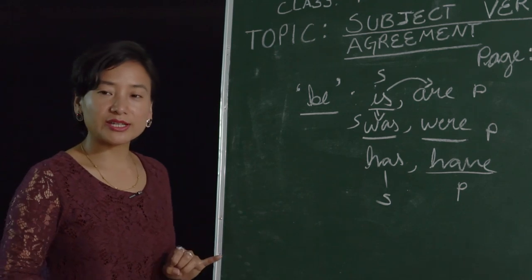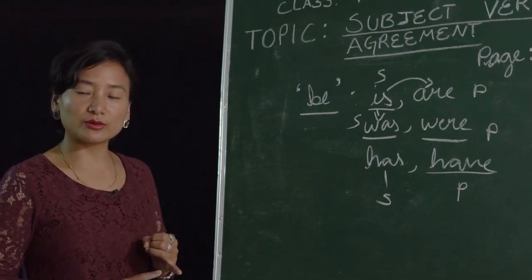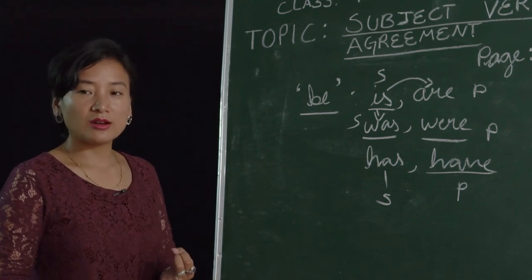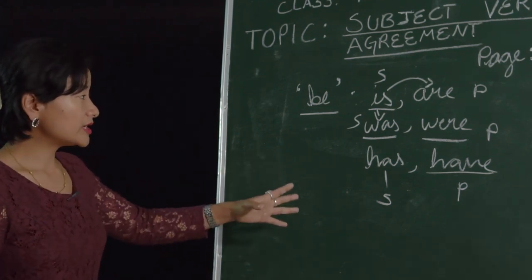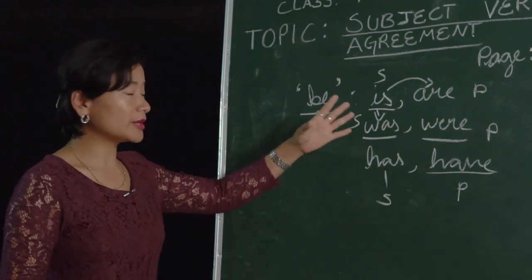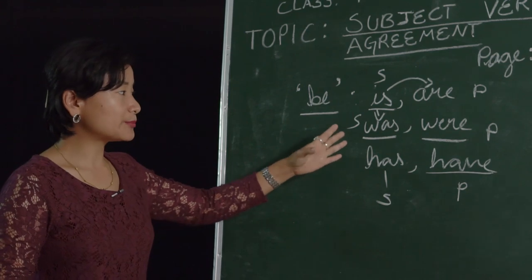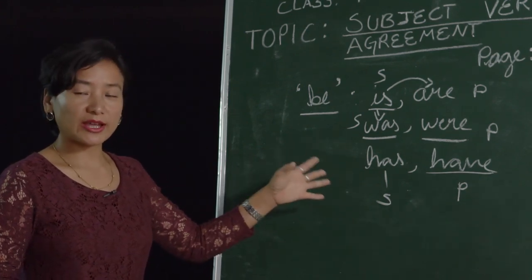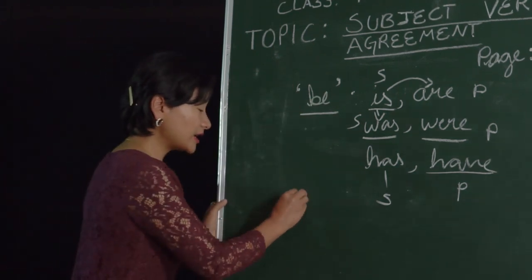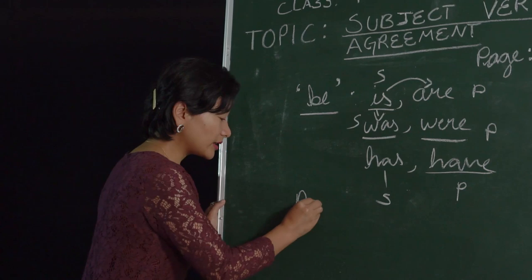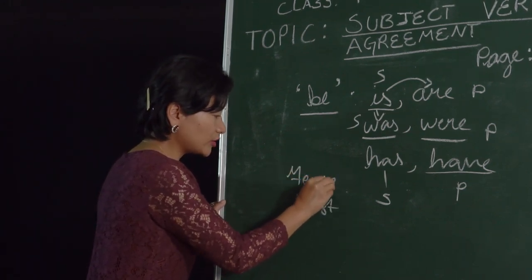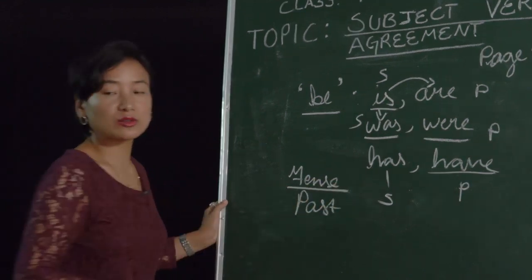The next thing we've learned is that the subject and verb should agree according to person — whether it is third person singular, first person singular, and so on. Now we are also discussing tense. If we are able to differentiate between singular and plural, and whether it is past or present, that will help us get our subject-verb agreement right. So what we are discussing is the tense — past, present, future — and the tense should also agree.